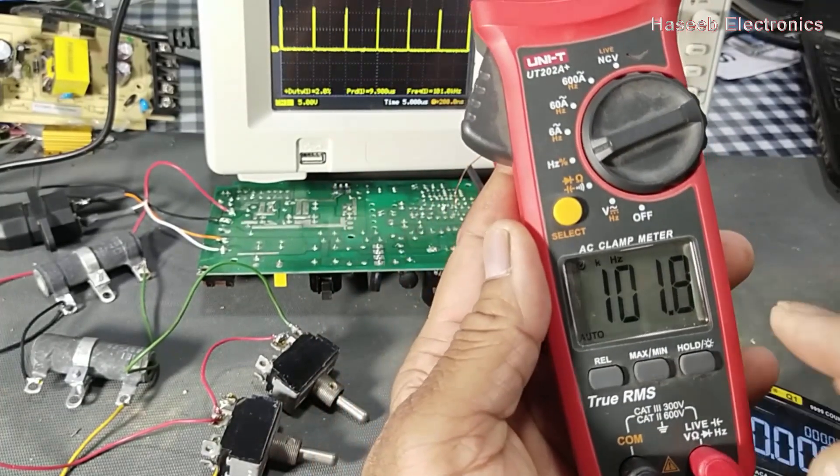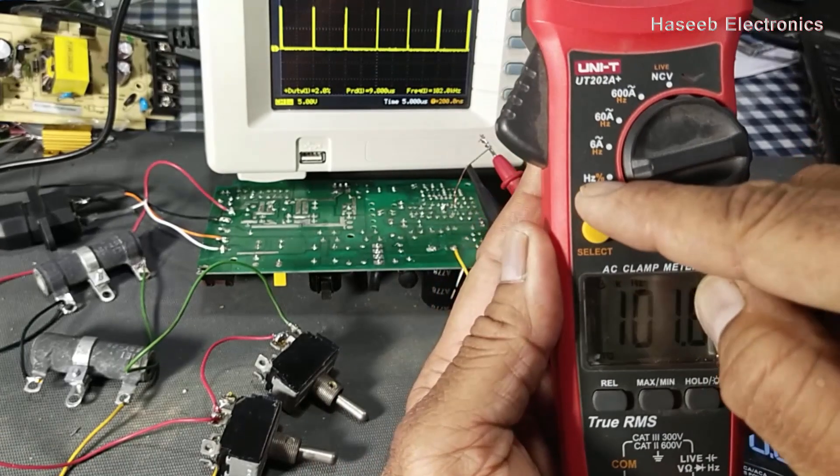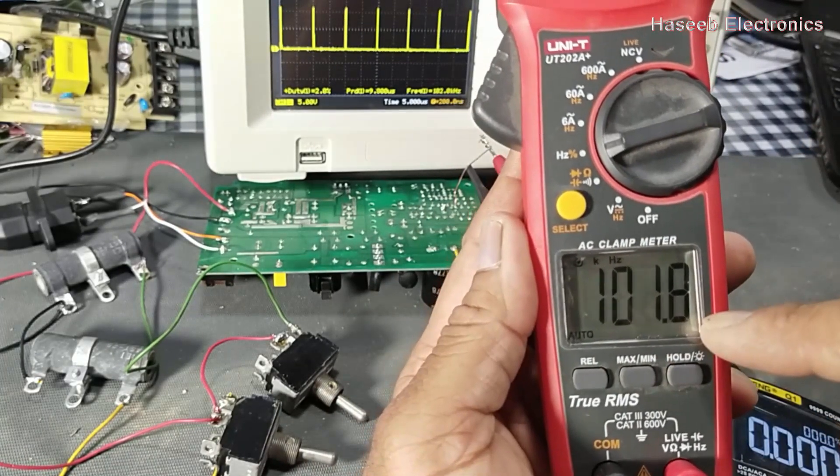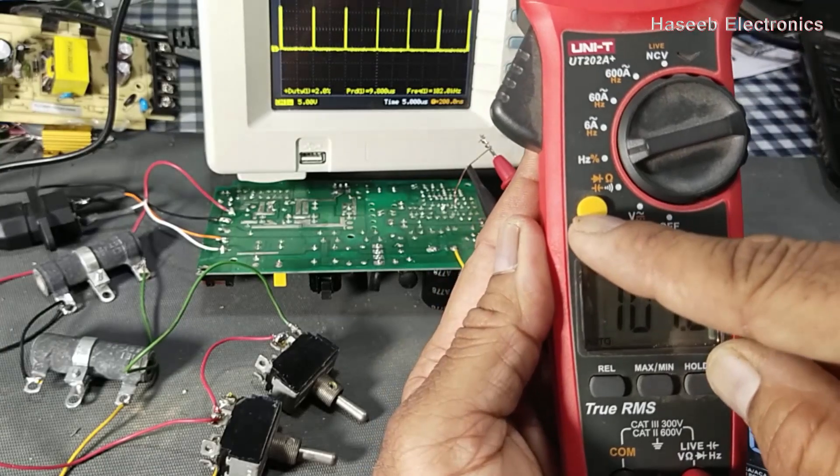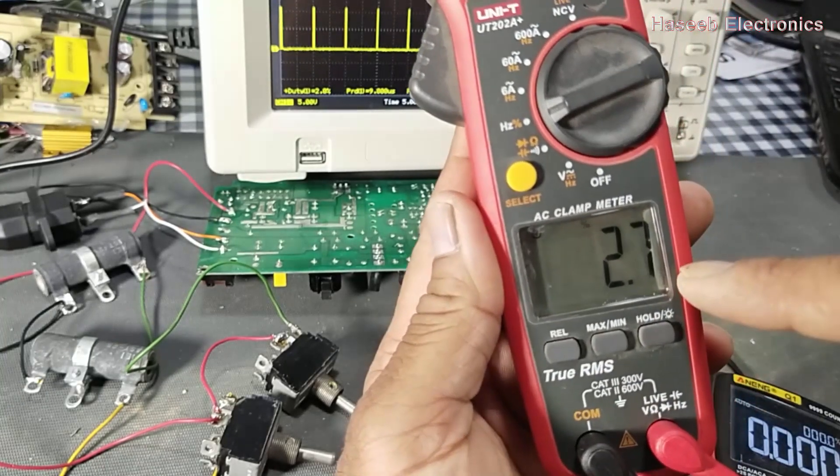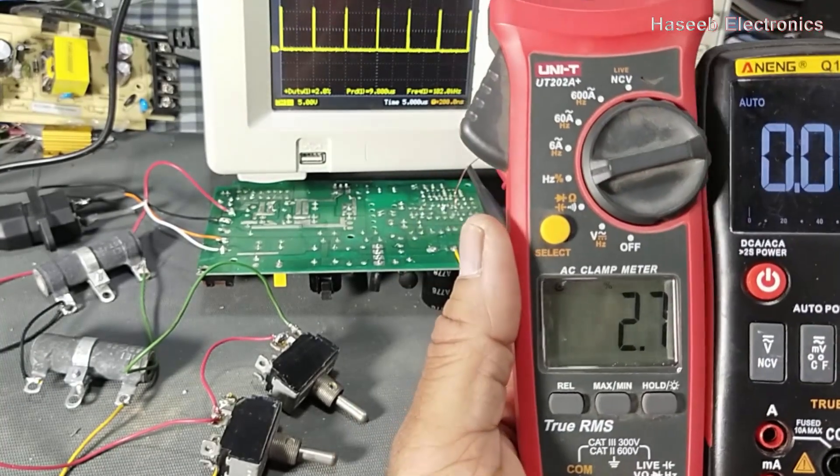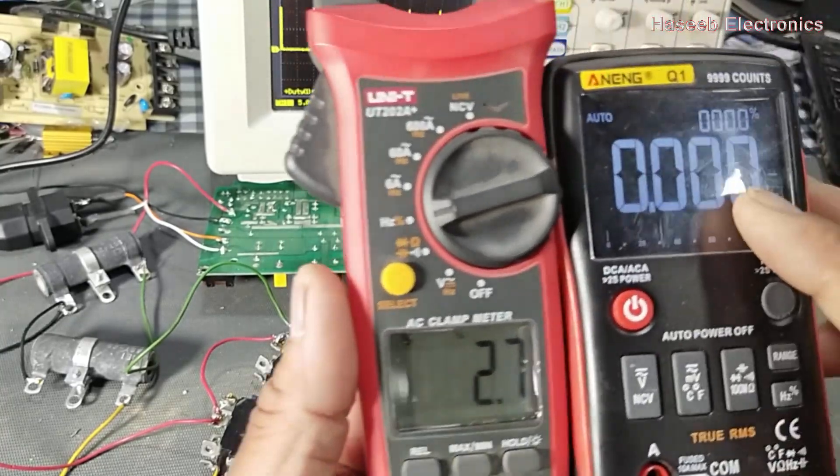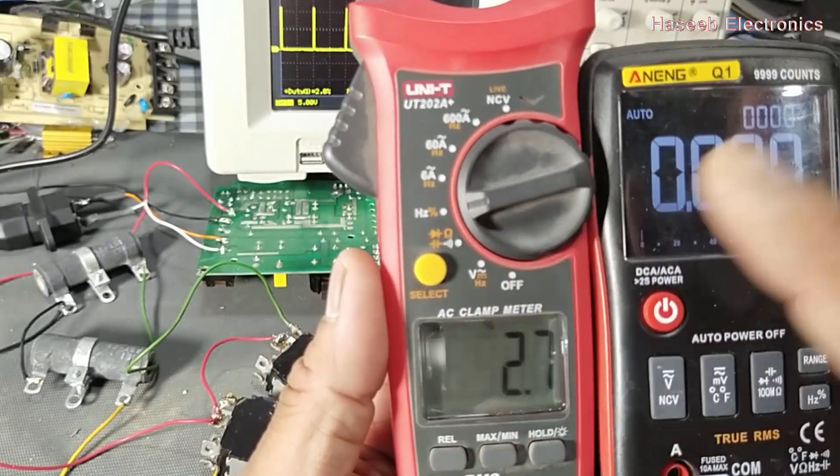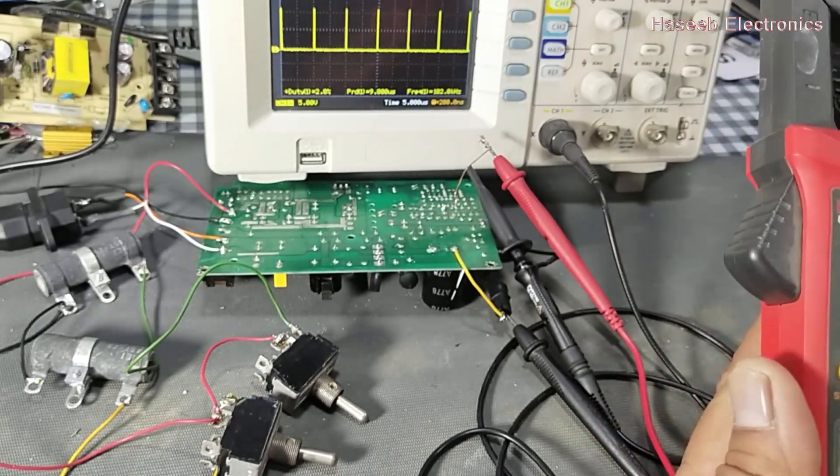Set knob to frequency option - 101 kilohertz. Press this yellow button, it will give 2.7 percent. This multimeter shows 2.8 percent, 2.7, 2.8, or 3 percent.